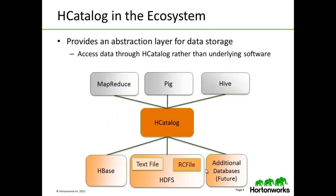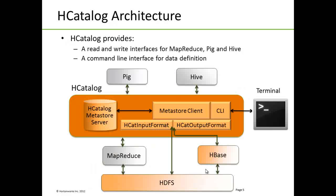H-Catalog in the Hadoop ecosystem provides an abstract layer for data storage. One accesses the data through H-Catalog rather than the underlying software. H-Catalog provides read and write interfaces for MapReduce, Pig, and Hive. Command line interfaces are also available for data definitions. H-Catalog takes Hive's Metastore and wraps additional layers around it to provide services. It comes with HCatInputFormat and HCatOutputFormat for MapReduce users, and HCatLoader and HCatStorer for Pig users.